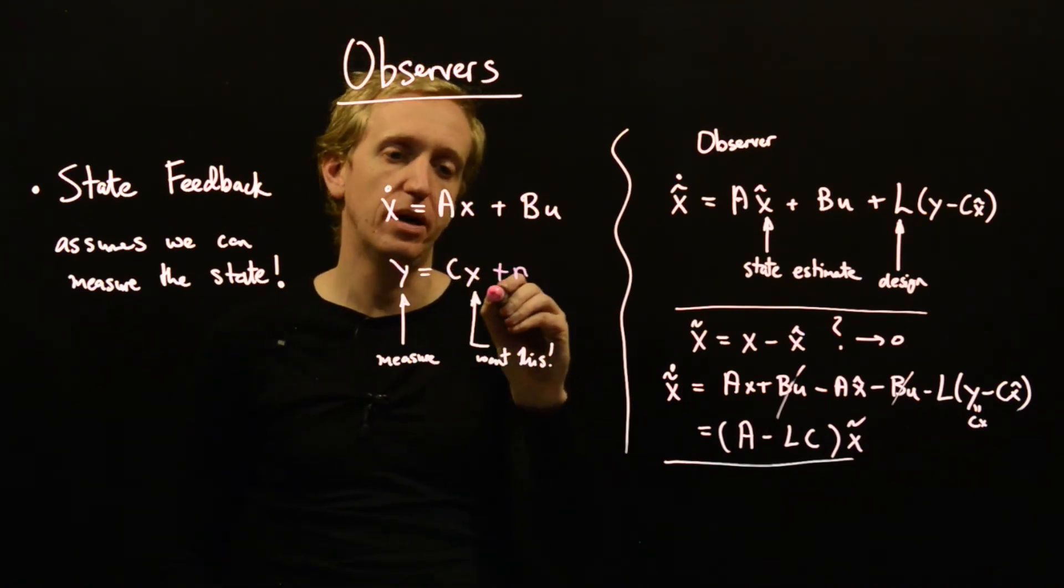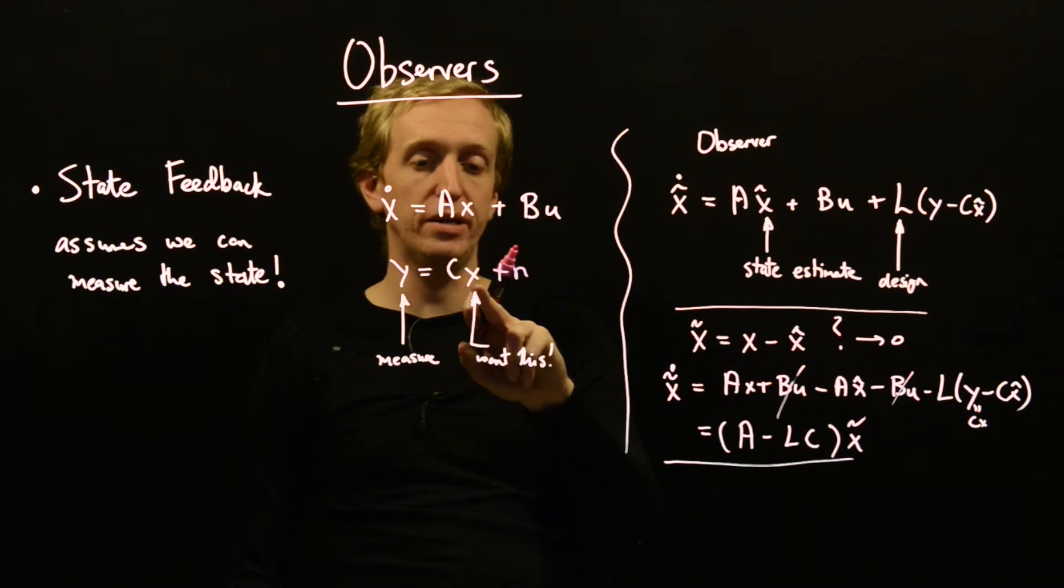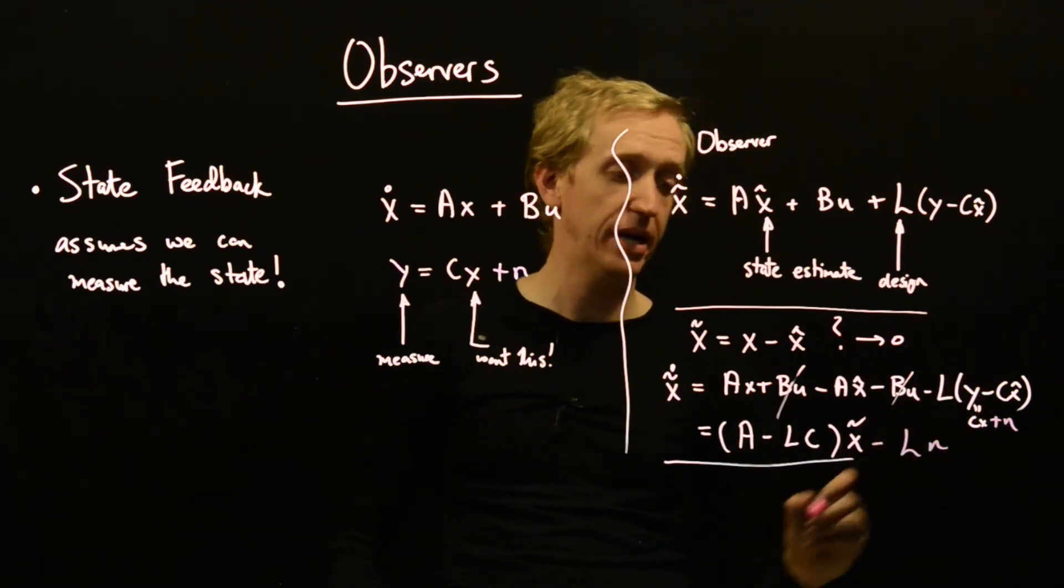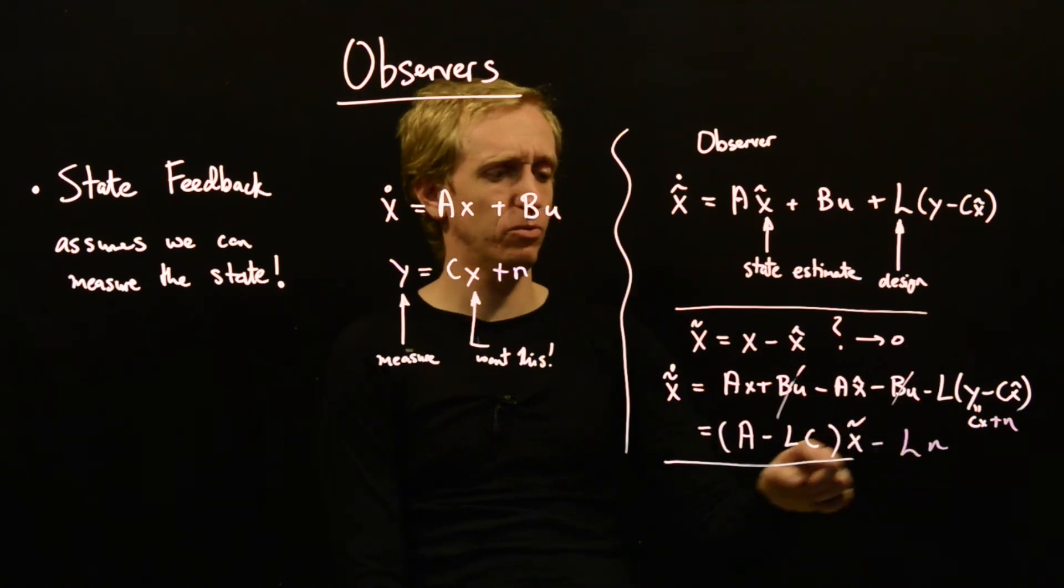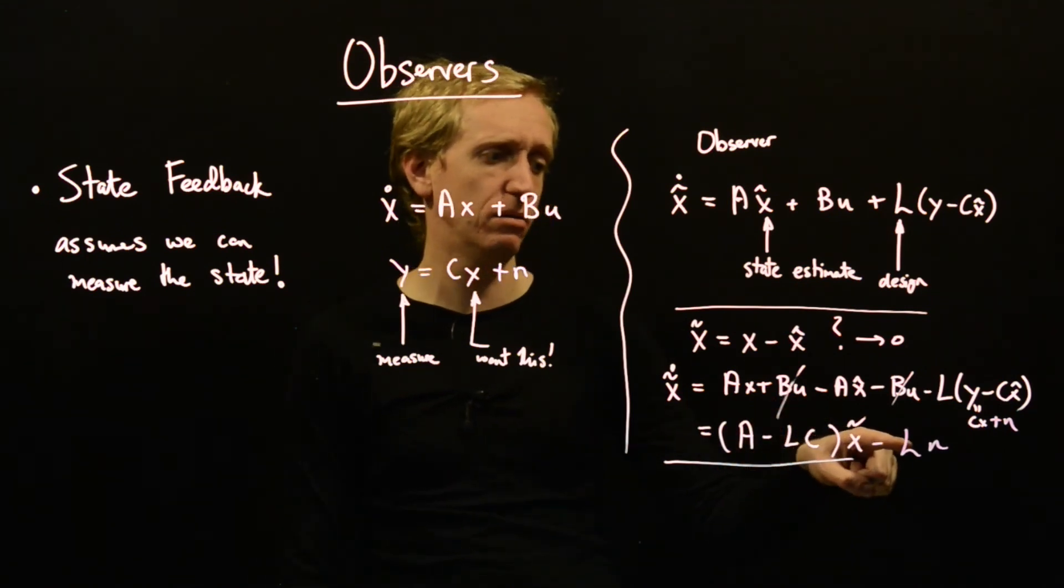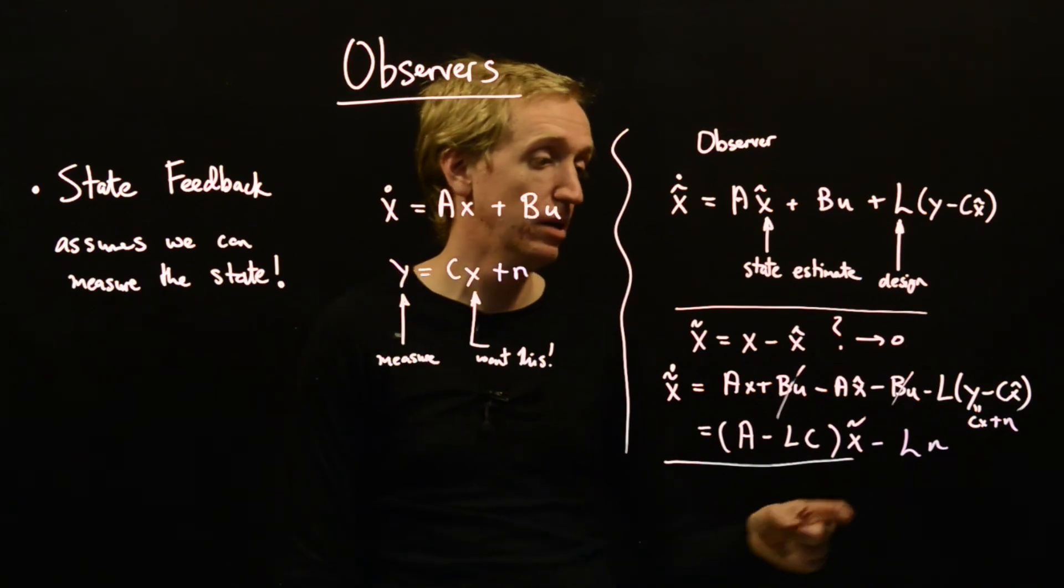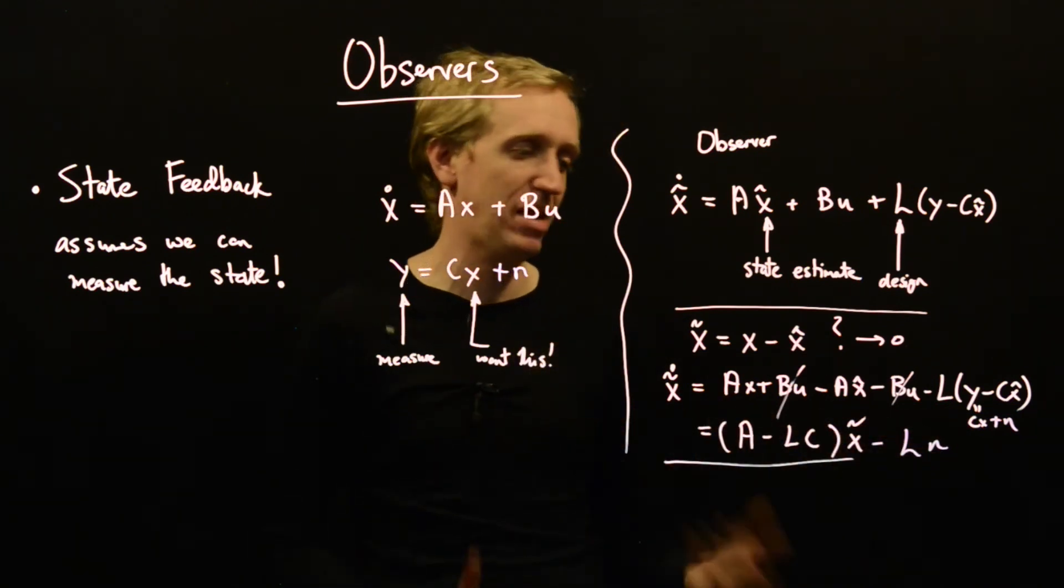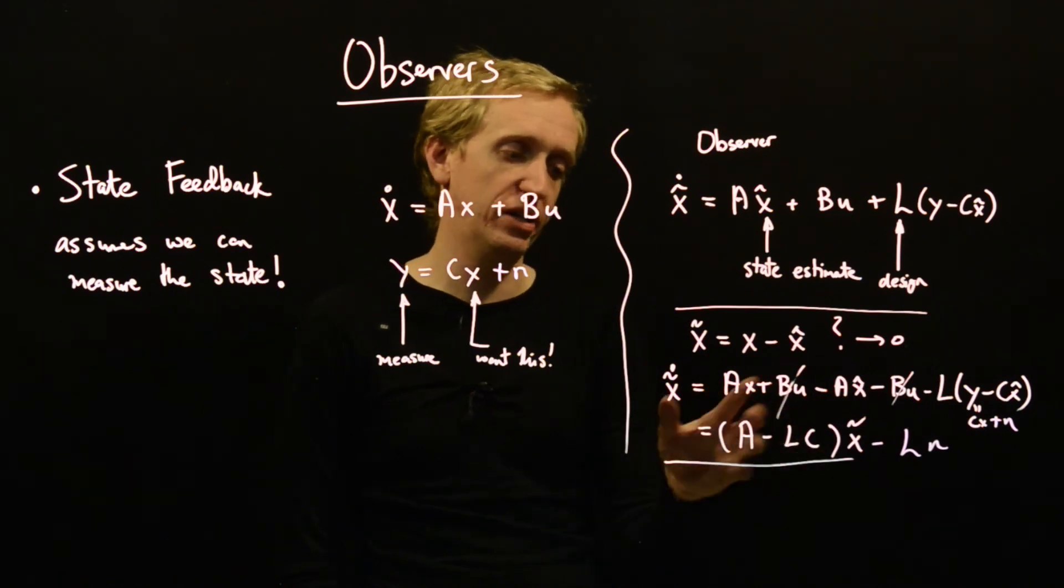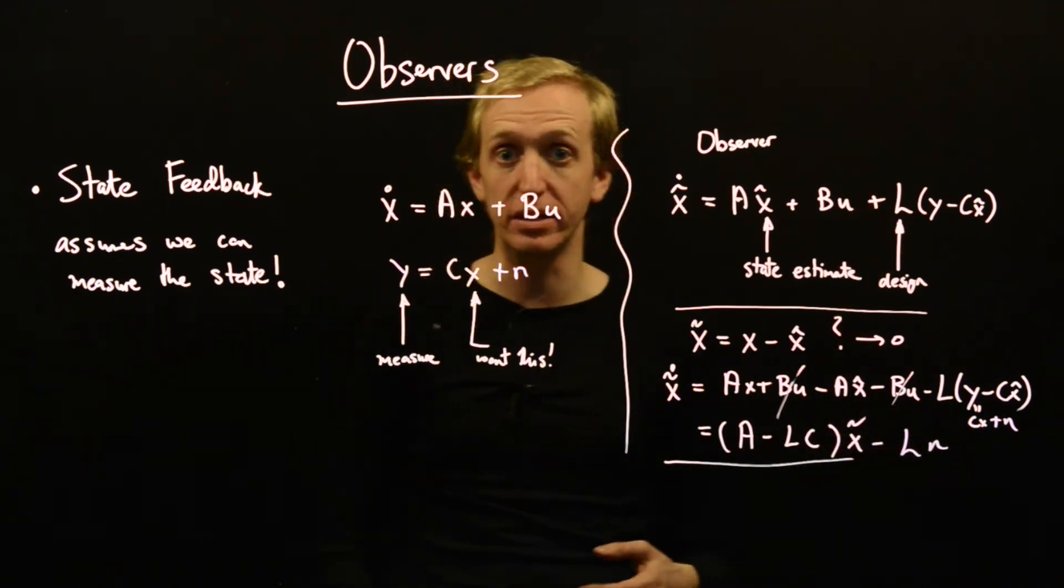There's a little bit more we could say about this. Let's suppose we've actually got some noise in our measurement, so now y equals Cx plus n. Then here we would have minus Ln. So it's clear that we should place our poles so they lie in the left half plane, so our error tends to zero. But we also see that if we pick L to be too big, so L's a matrix and we put huge numbers in, then any noise we have in our measurement is going to be massively amplified. So we've got a bit of a trade-off here. We need to pick nice stable poles, but we shouldn't do it with too high an observer gain, otherwise we'll just amplify any noise we have on our sensor readings.